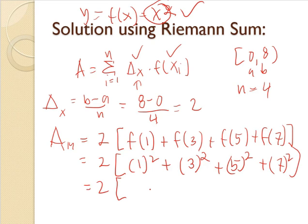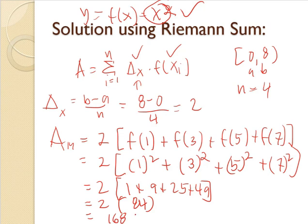We compute the values inside the bracket. This is 1 plus 9 plus 25 plus 49. So this is 2 times sum of 1 plus 9 plus 25 plus 49 is 84. So 2 times 84 is 168. And our unit of measurement is square units.